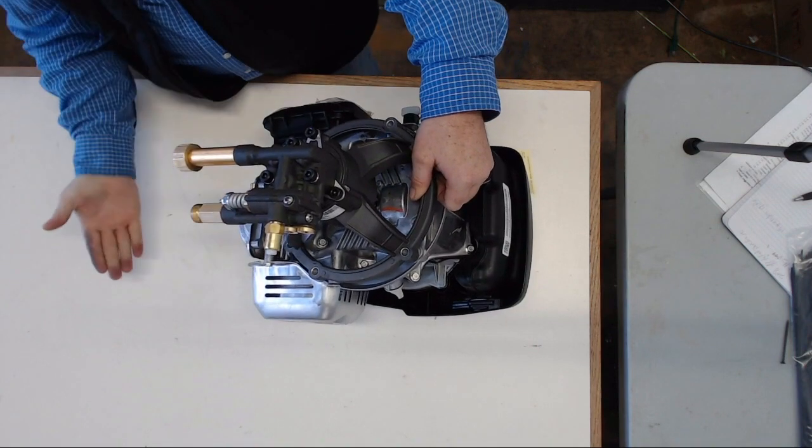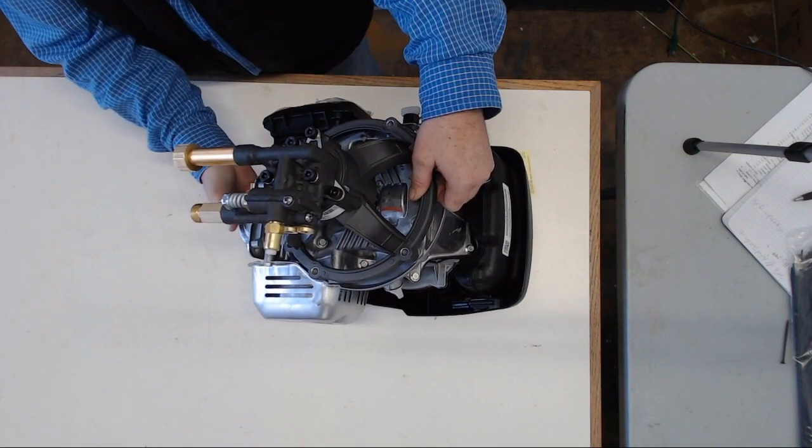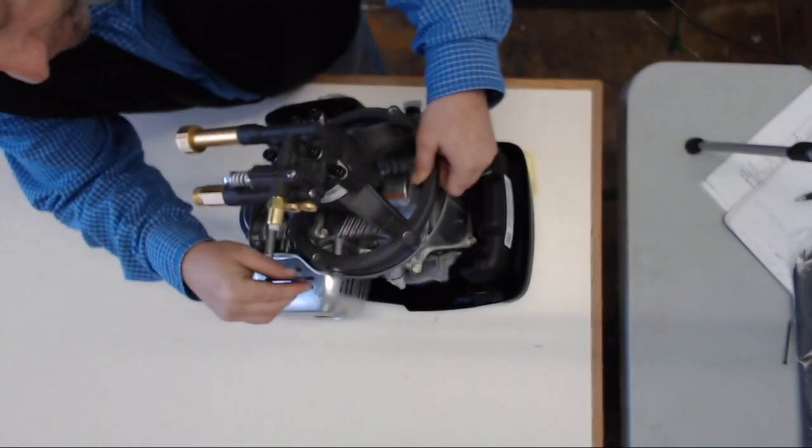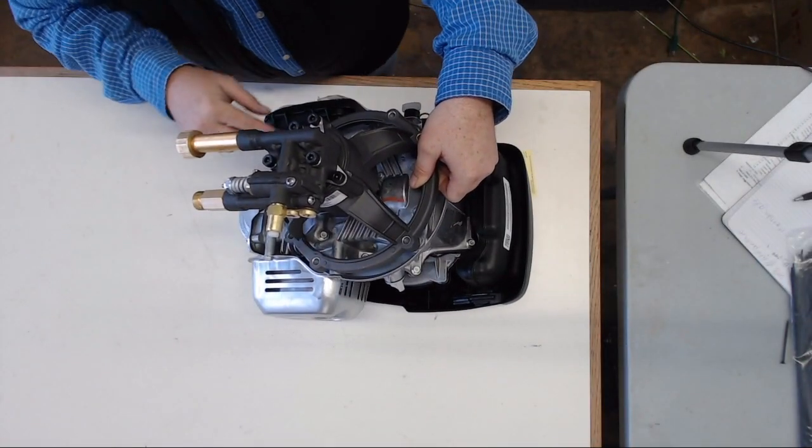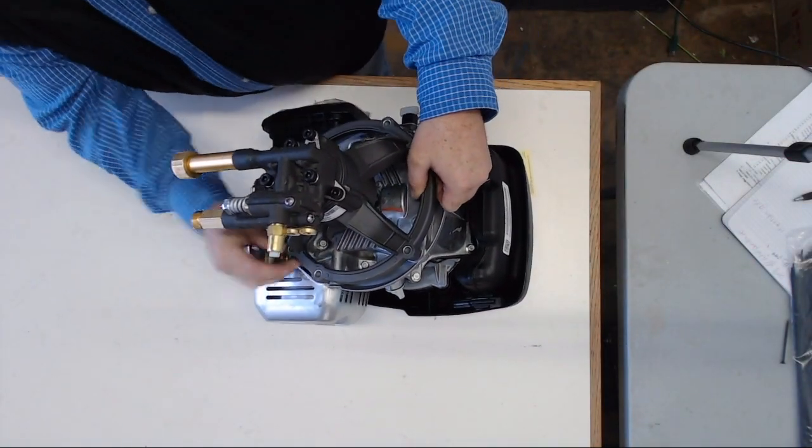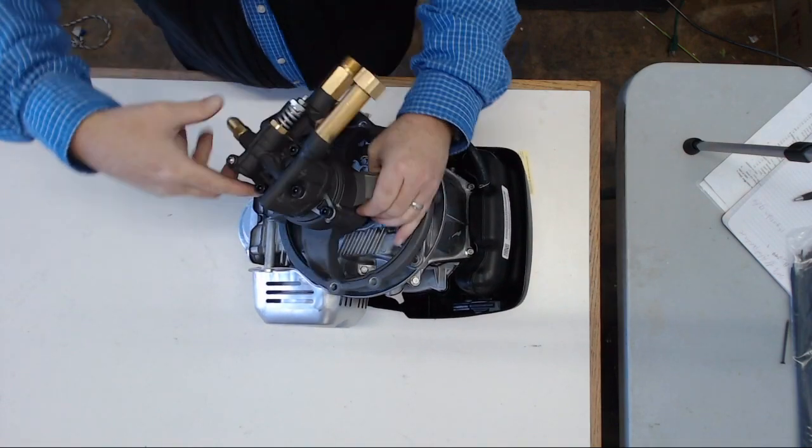And if you line it up forward, which is to your spark plug, as you can see, your bolt holes will line up. You'll have one, two, and three holes lining up correctly. You can turn it around backwards,